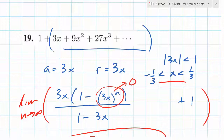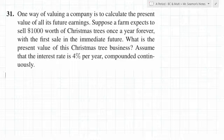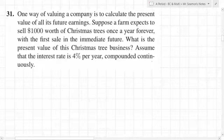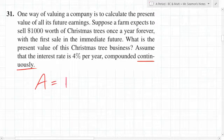One way of valuing a company is to calculate the present value of all its future earnings. Suppose a farmer expects to sell $1,000 worth of Christmas trees once a year forever. What is the present value of the Christmas tree business? The problem says 'continuously' — is that important? Yes, it is. Do you remember the formula for continuous interest for finding the amount?